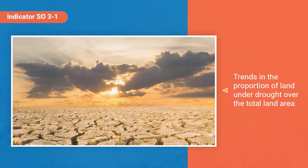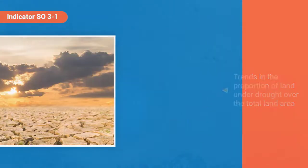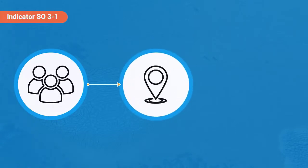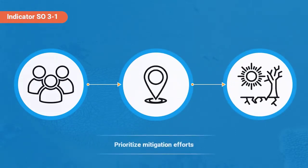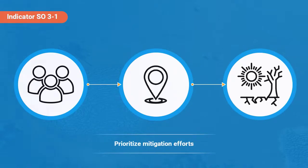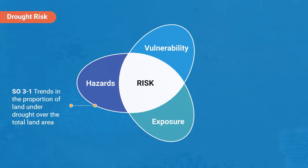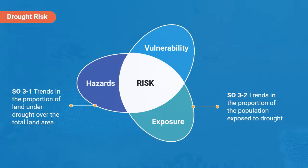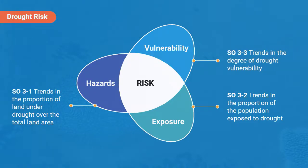With the provision of spatial data in PRAISE, parties can see what regions are experiencing more extreme droughts in order to prioritise mitigation efforts, and estimate drought risk in conjunction with assessments of drought exposure — SO3.2 Trends in the proportion of the population exposed to drought — and vulnerability — SO3.3 Trends in the degree of drought vulnerability.